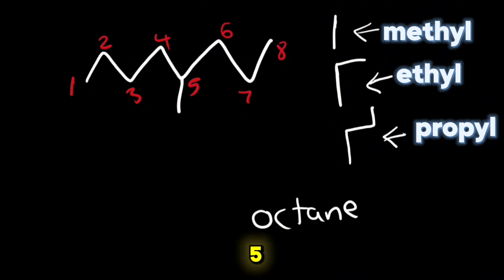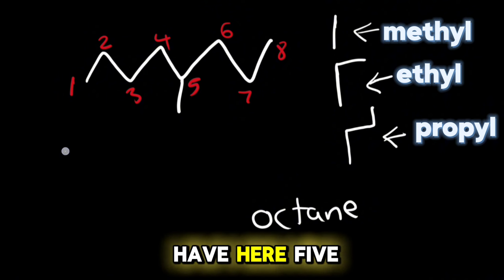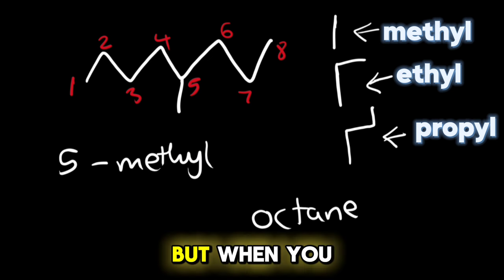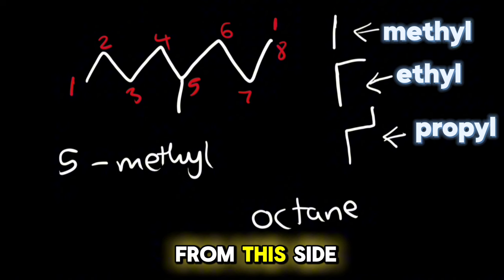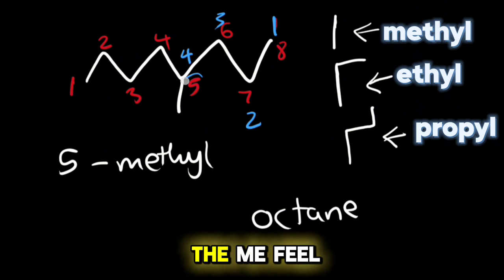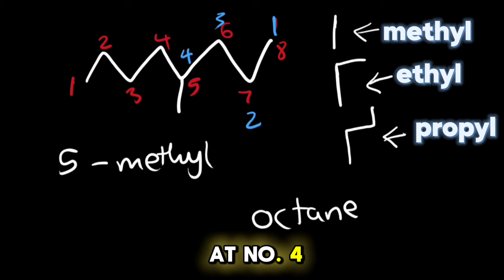So it means that we will have here 5-methyl. This will be the case, but when you start numbering from the right side, when you start from this side you'll have one, two, three, four, and you'll have the methyl at number four. We will have another answer: 4-methyl.